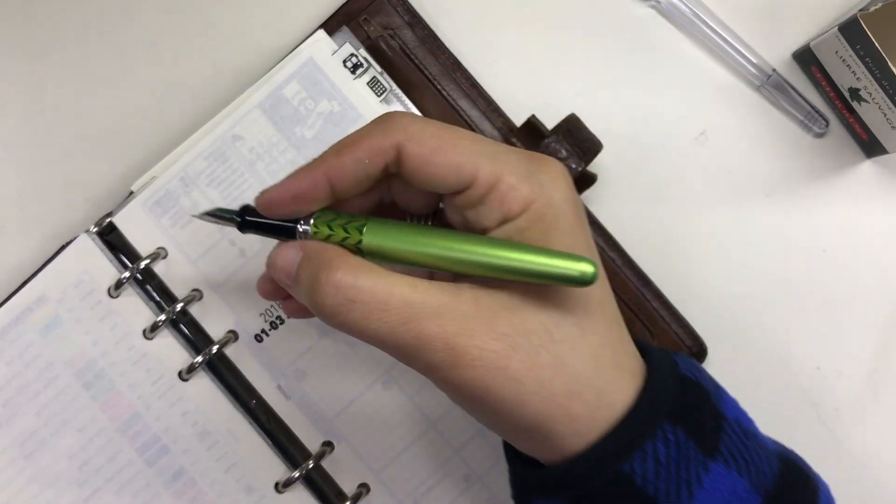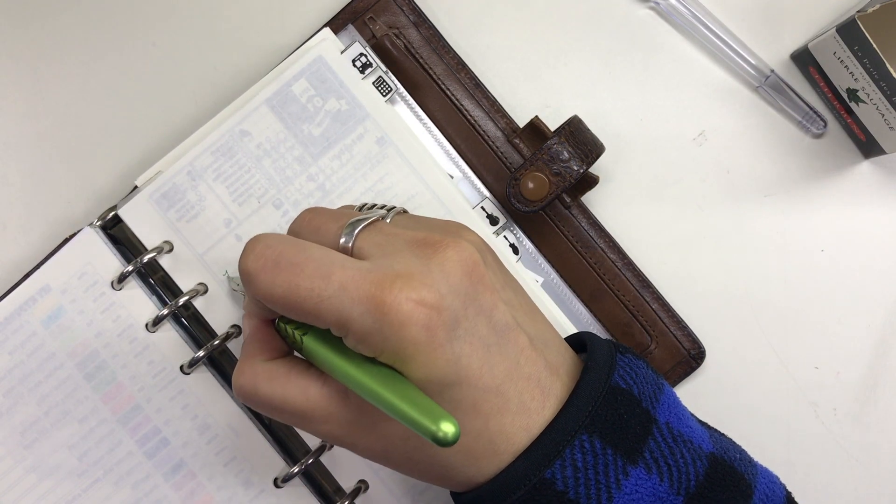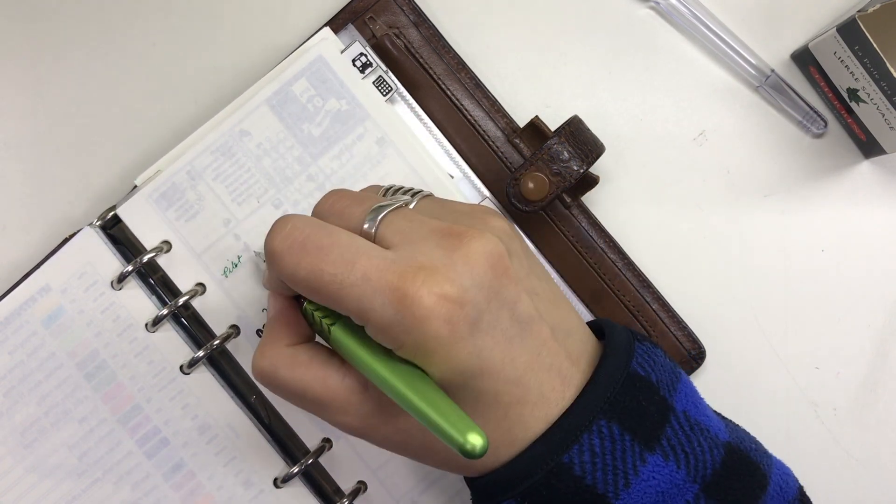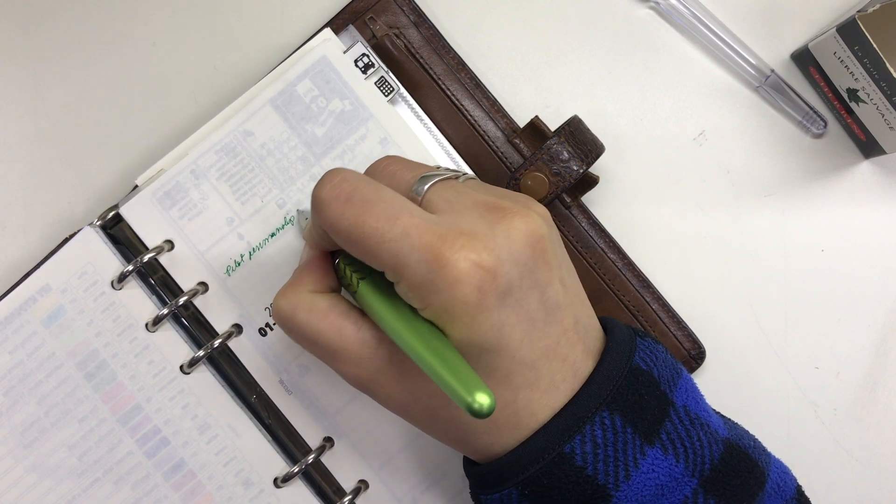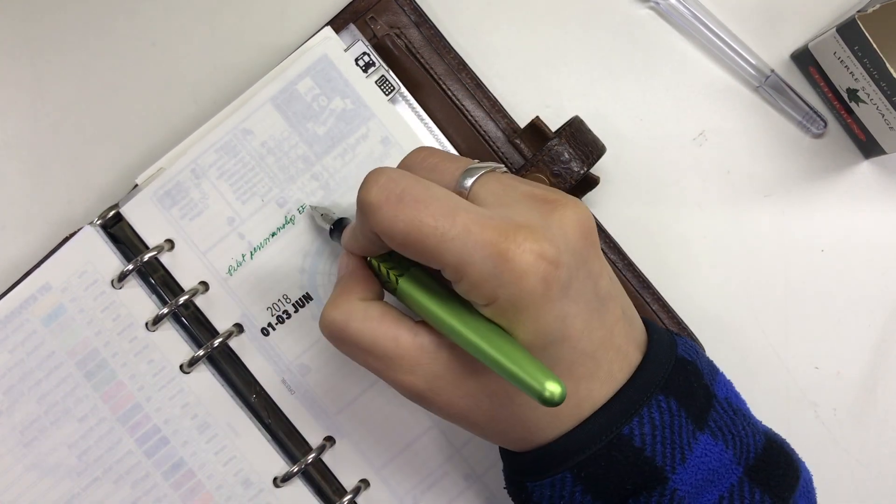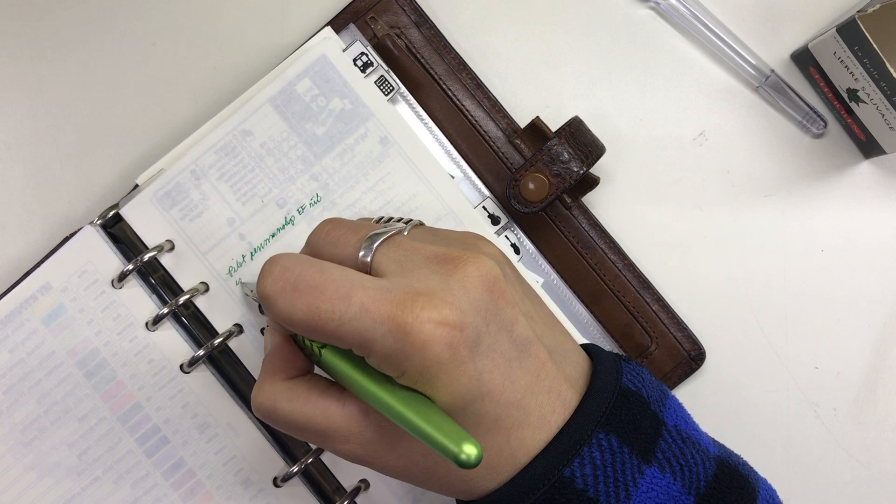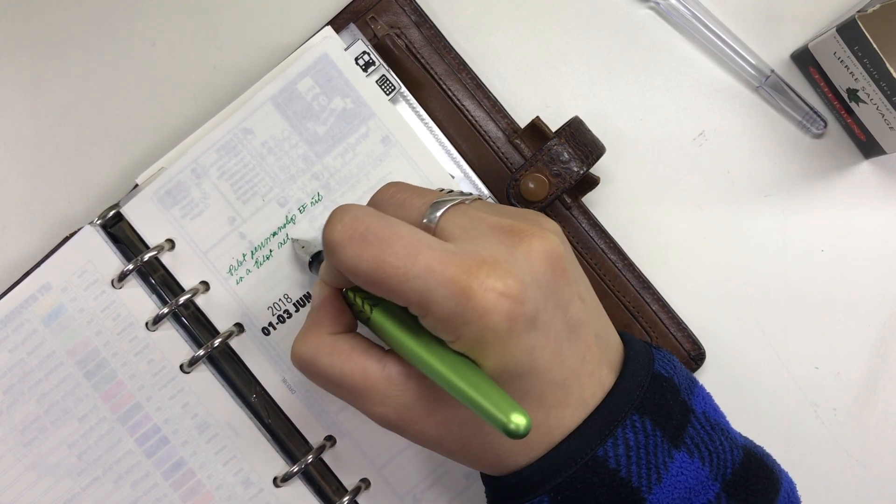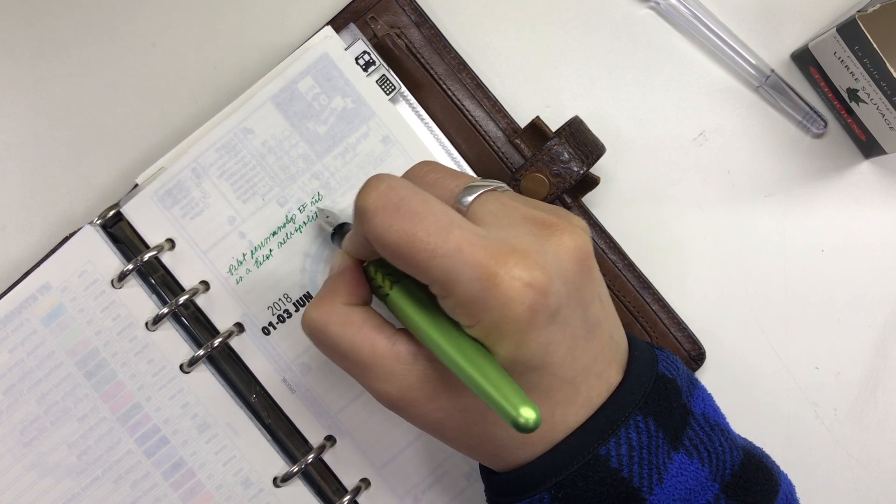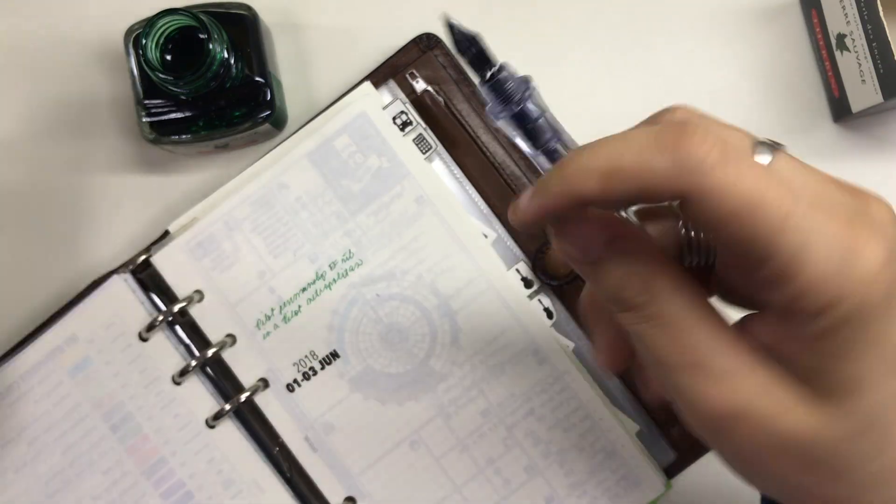Then I took out my planner, the Filofax Savannah, so I can try writing on Tomoe River paper. I have a video about how I set up this planner and I will link it down below. And it writes like an absolute dream.